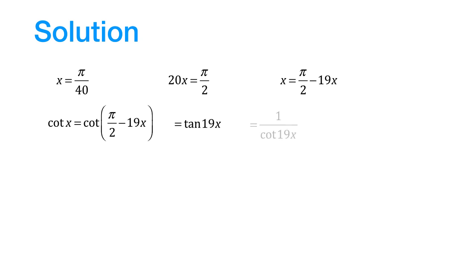tan 19x can be written as 1 divided by cot of 19x, which means the product of cot x and cot 19x would be equal to 1.